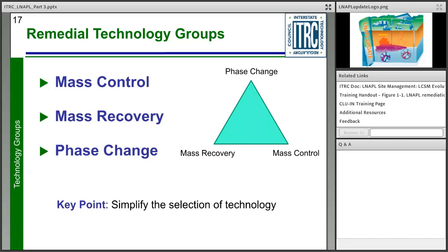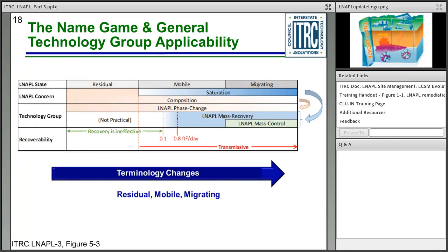You'll see a ternary diagram in the corner of the slides as we move into more technologies. This shows the primary mechanism — described in section 5 of the document — of how LNAPL remediation takes place. Most technologies also act in other ways, so multiple actions can be represented by the diagram. The dots show where a technology fits in the remedial technology group: mass control, mass recovery, or phase change. Some technologies fit into more than one group and will show an oblong shape.